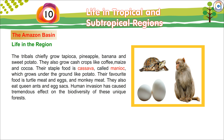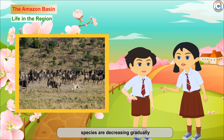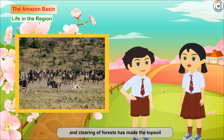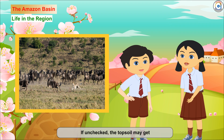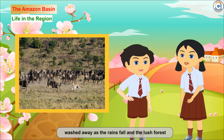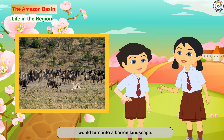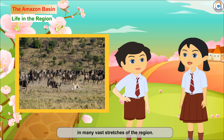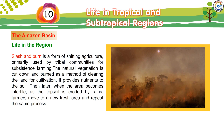Human invasion has caused a tremendous effect on the biodiversity of these unique forests. The number of plant and animal species is decreasing gradually, and clearing of forests has made the topsoil prone to soil erosion. If unchecked, the topsoil may get washed away as the rains fall and the lush forest would turn into a barren landscape. This has already happened in many vast stretches of the region. Slash-and-burn is a form of shifting agriculture, primarily used by tribal communities for subsistence farming.